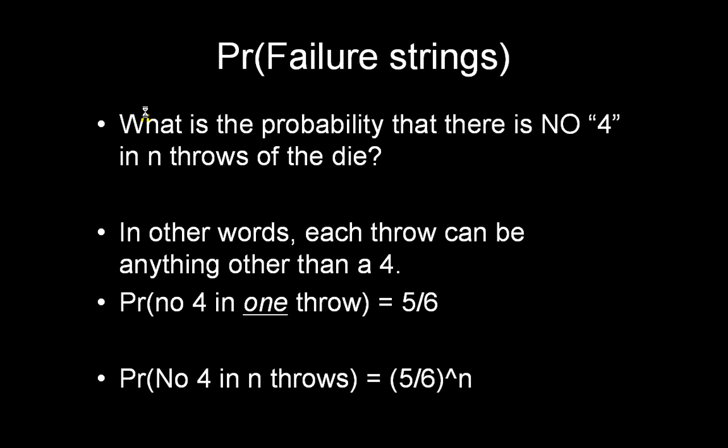So five by six raised to the n is the probability of not getting a four in any of the throws. Now we can calculate the answer that we are looking for. The probability of getting at least one four, which is what we are really interested in, is one minus the probability of not getting a single four, which is one minus five by six raised to n.